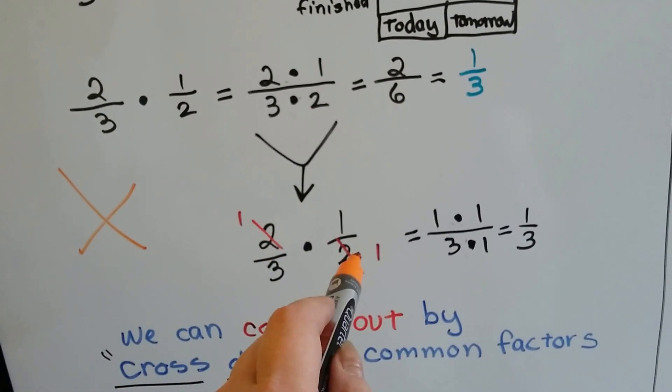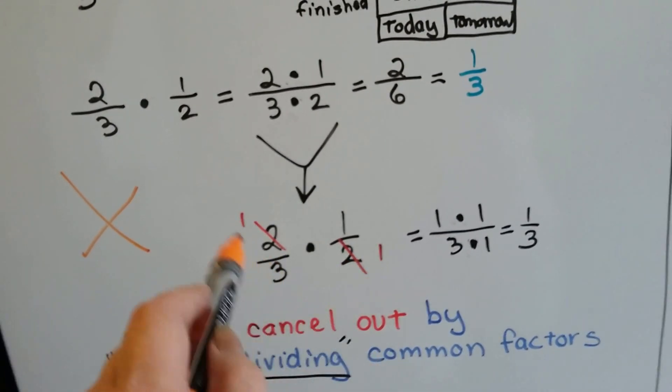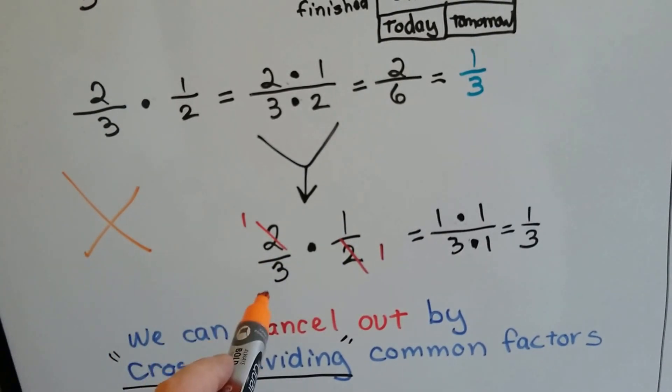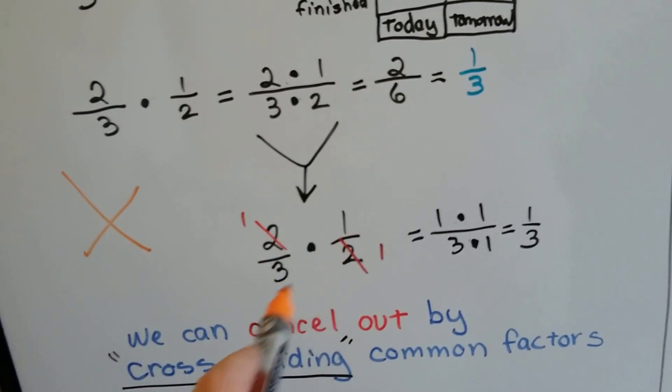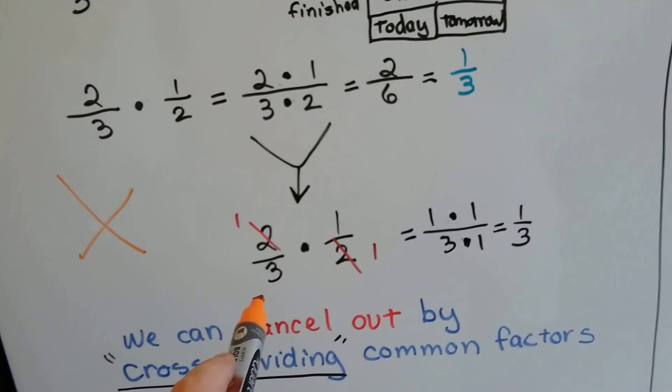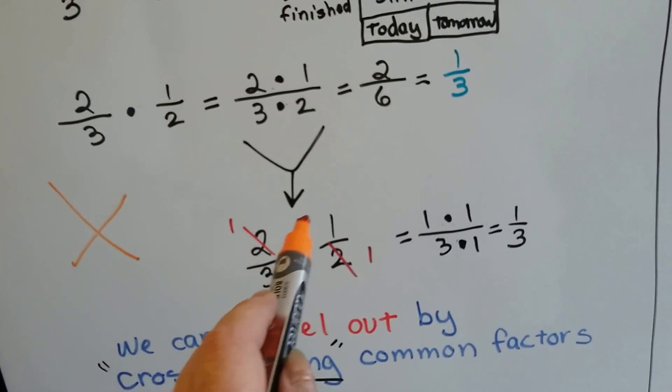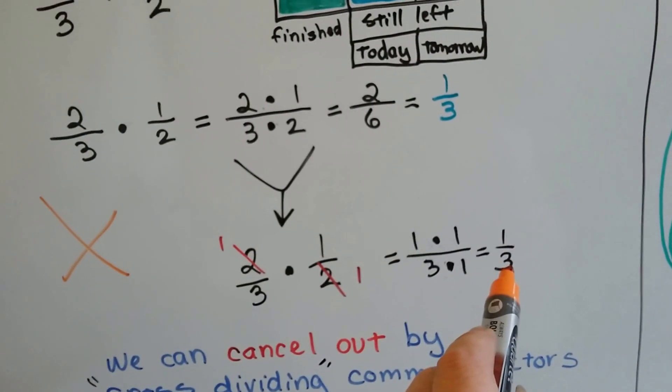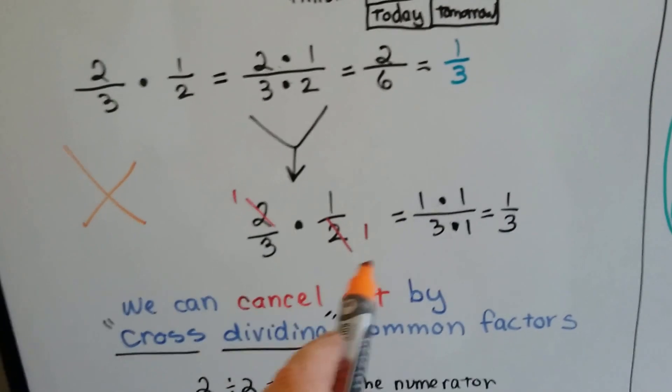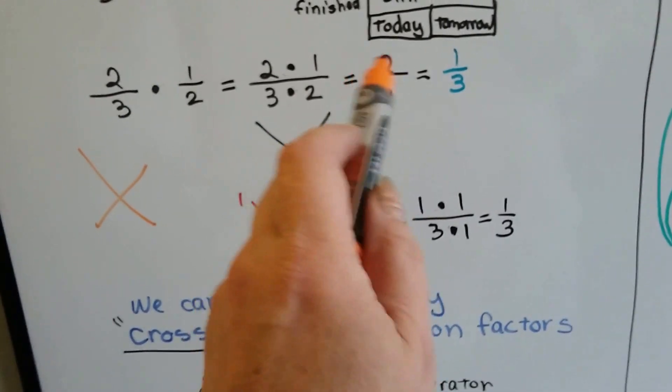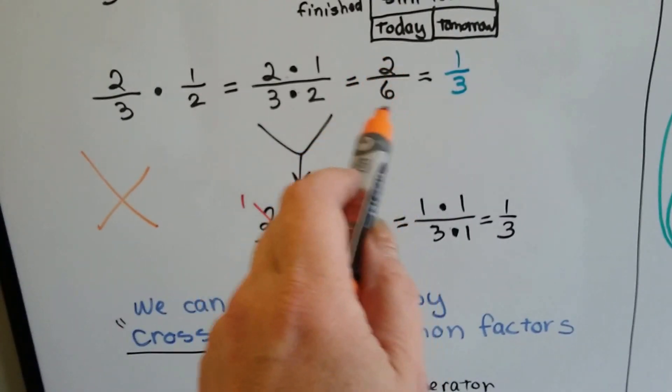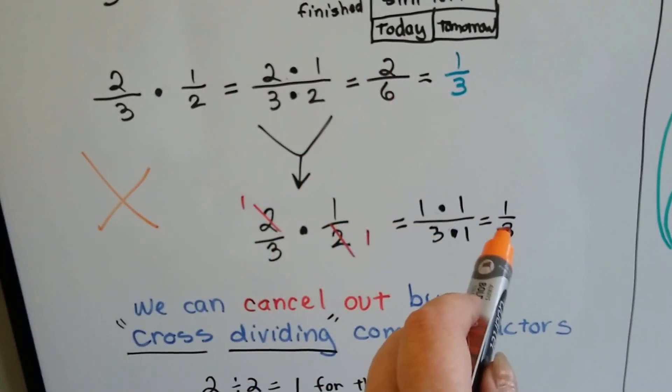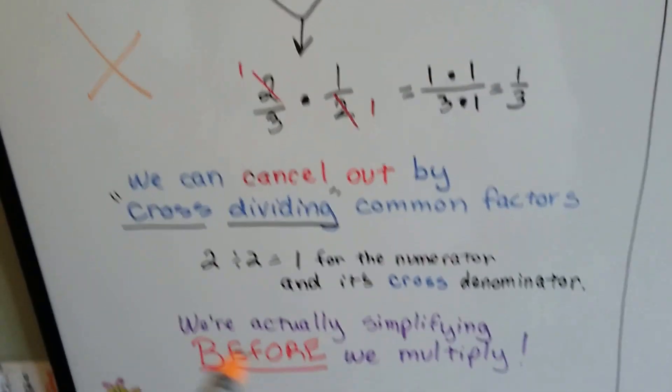Two can go into two one time, so we put a one here and a one there. The one and the three are as small as they can get. They can't be divided anymore, so now we have one times one over three times one, which is a third.